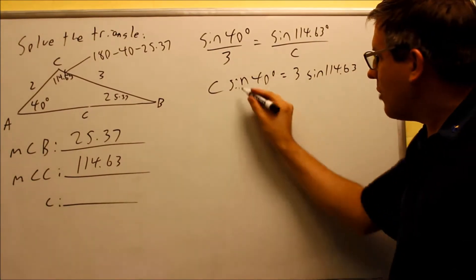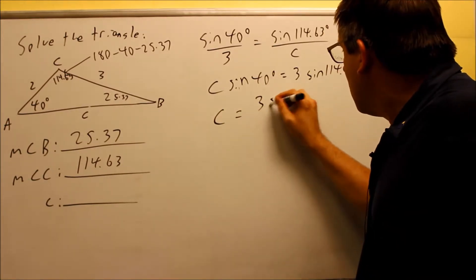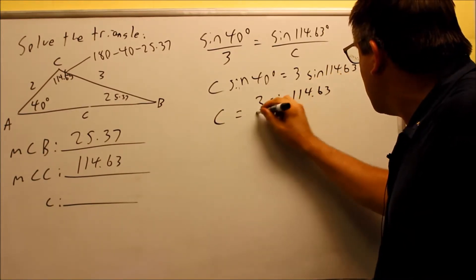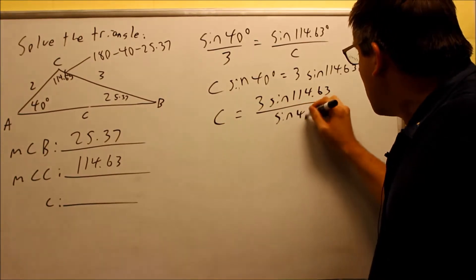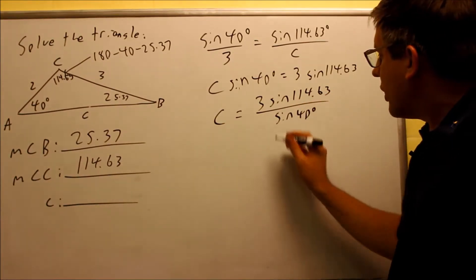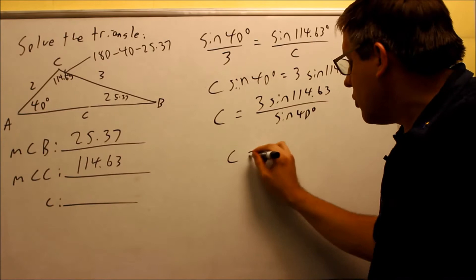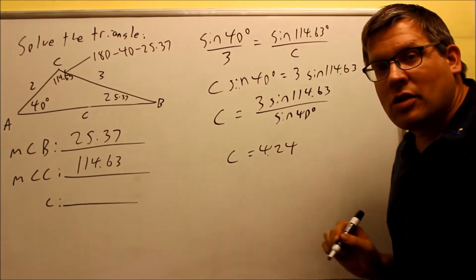We're cross multiplying, divide both sides by sine 40, we get 3 sine 114.63 all over sine 40. And if we put that into our calculator with the two decimal places, we get 4.24 as the answer.